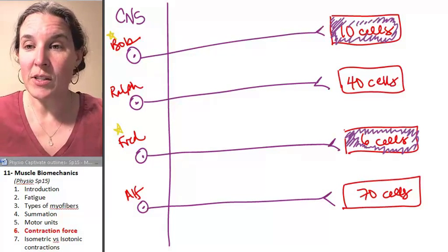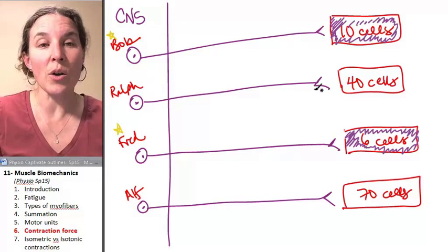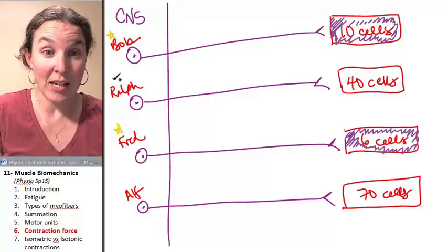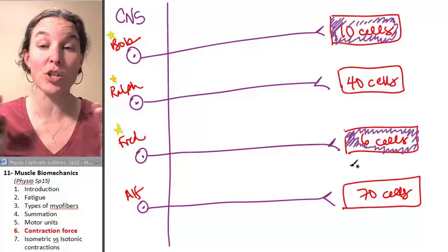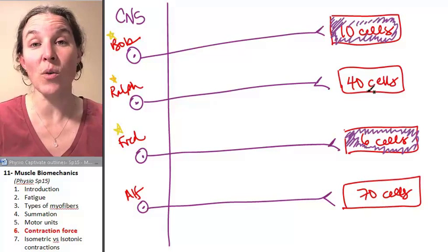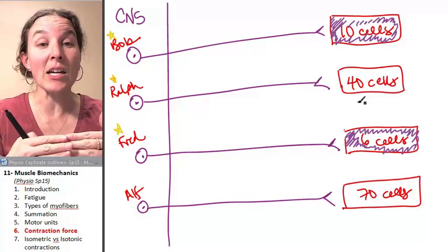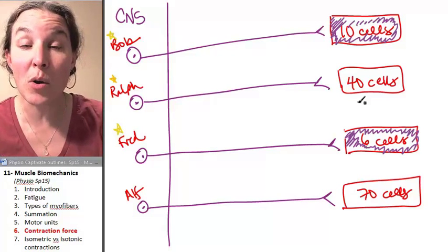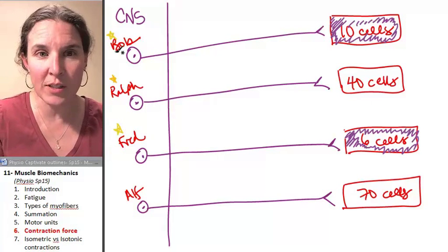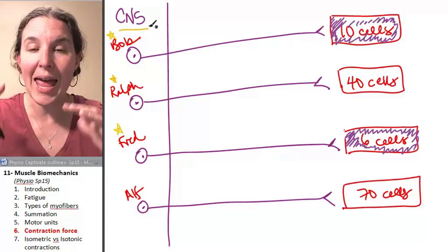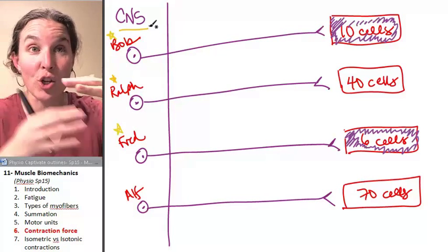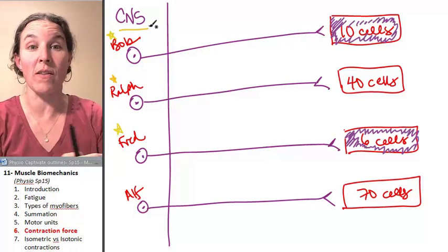The central nervous system can also say, you know what, we're going to go ahead and activate three of us. Not all of us. Just three of us. The message is going to go out to three of us. And by controlling the number of motor units that are activated, the central nervous system can control the end result, the end contraction, the gross motor movement that takes place.